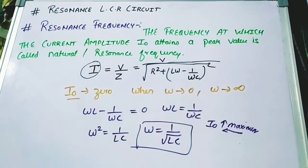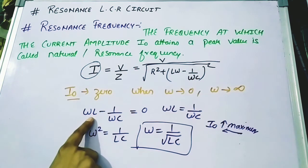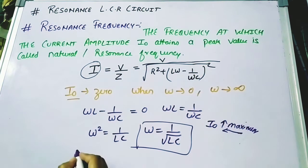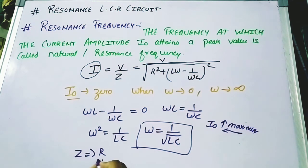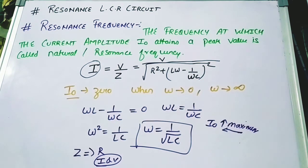When the inductive reactance equals the capacitive reactance, the overall resistance of the circuit reduces to R. The current and voltage will be in phase because the effect of the capacitor and the inductor are out of phase by 180 degrees, and they cancel each other out, leaving only the purely resistive circuit with overall resistance R.